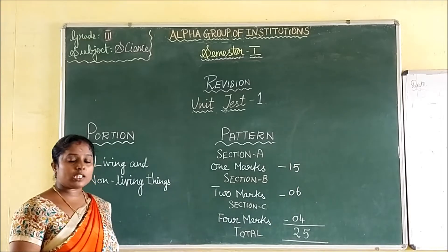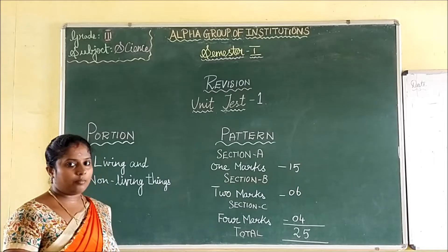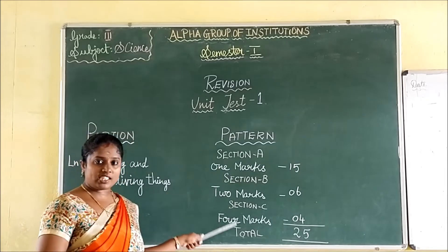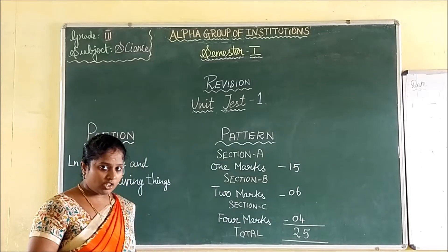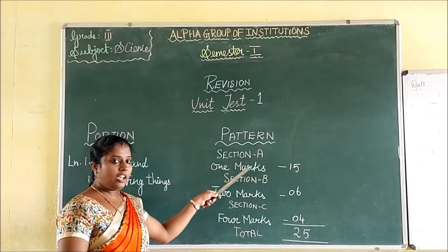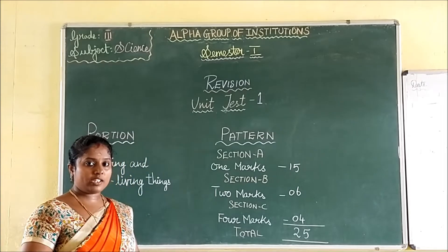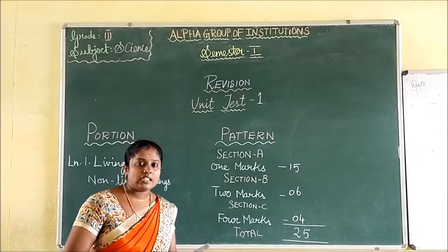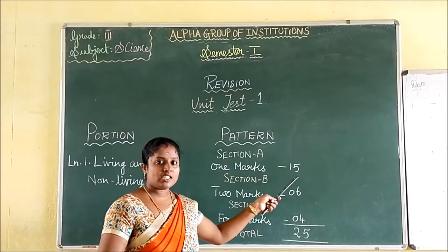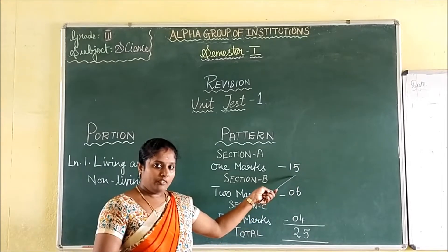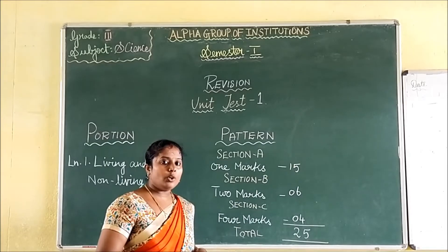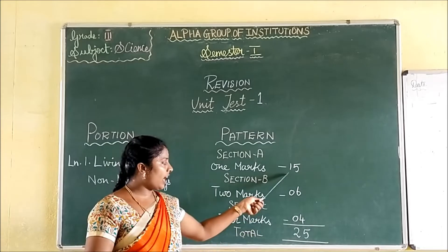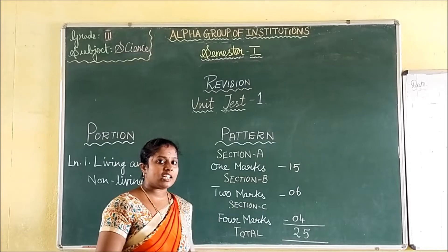Now about the pattern — how many parts are we going to write? Totally we are going to write it for 25 marks. We have 3 sections: Section A, Section B, and Section C. In Section A we have 1-mark questions — it will be like true or false, match, fill-ups, whatever. Each question carries 1 mark. How many questions? That is 15 marks, so 15 questions of 1 mark each. You have to concentrate on 1-mark questions.